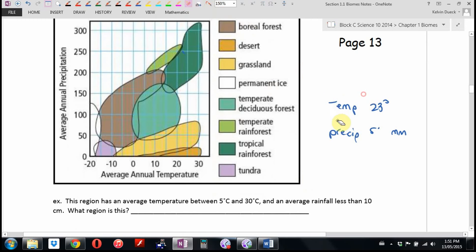So let's fill in some questions. Julia's got to put her phone face down for me. This region has an average temperature between 5 degrees and 30 degrees, and an average rainfall of less than 10 centimeters. What region is it? Let's see. An average temperature between 5 degrees and 30 degrees, average rainfall less than 10 centimeters. What region are we talking about here? Desert.